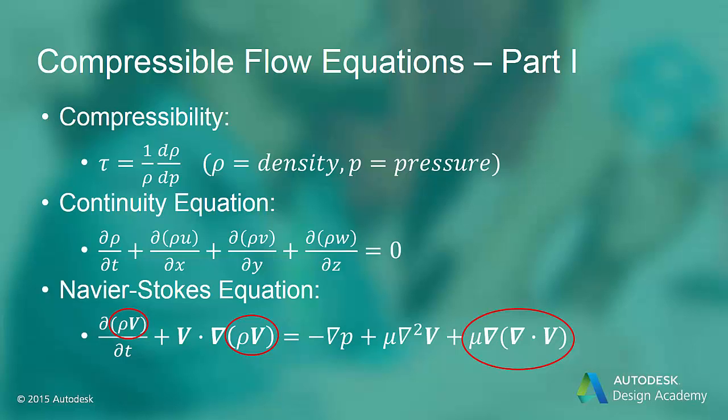Whenever the fluid experiences a change in pressure, there will be a corresponding change in density. For incompressible fluids like water, the compressibility is on the order of 10 to the minus tenth. This indicates that even large changes in pressure would result in very small changes in density.